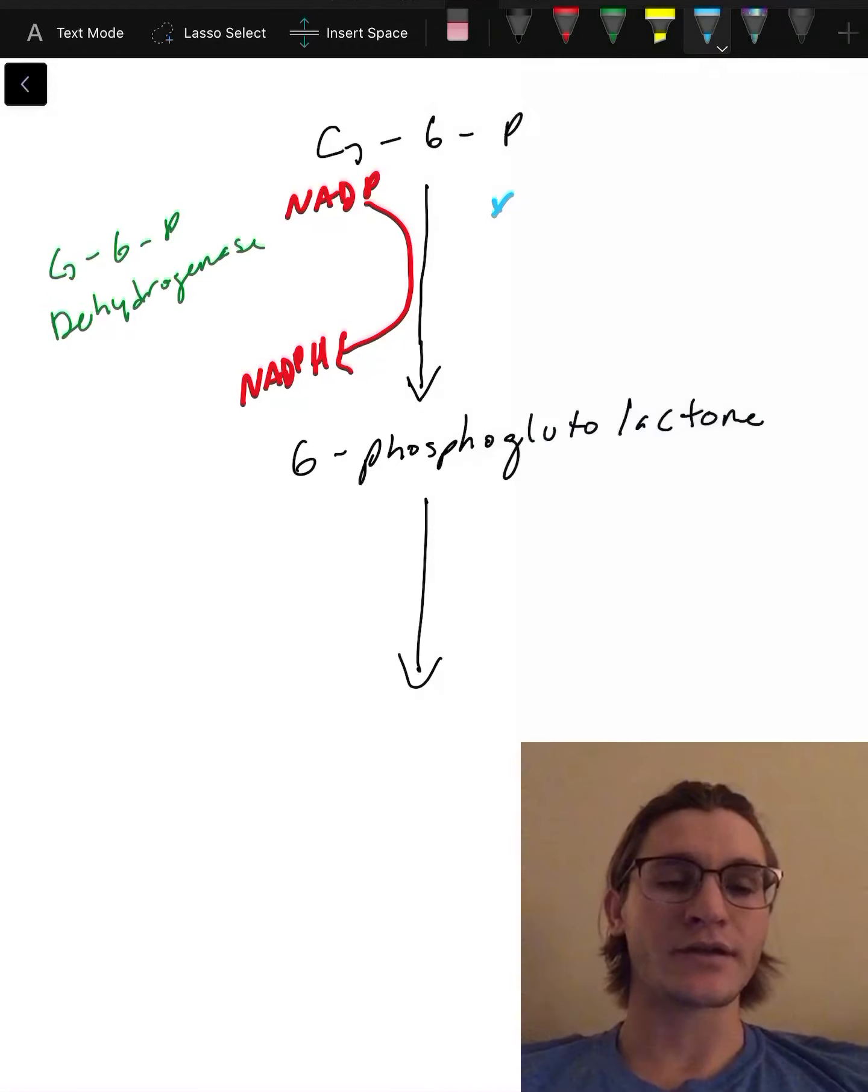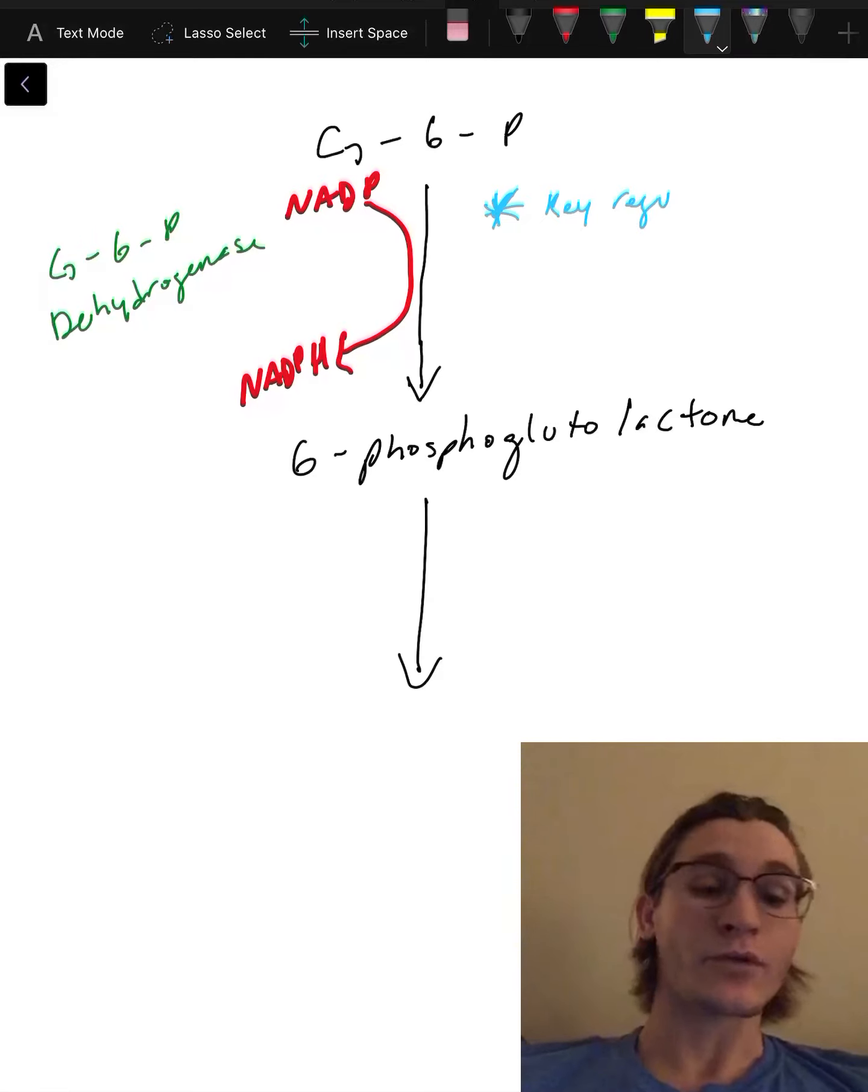That is gonna be our first indirect form of energy. This is one of the more important enzymes because it is a key regulatory enzyme, and it is important because if we want to stop or start this pentose phosphate shunt, we're gonna need some inhibitors to stop it or activators to start it.